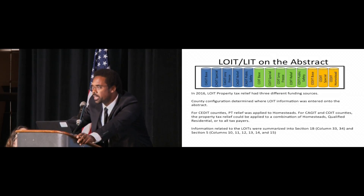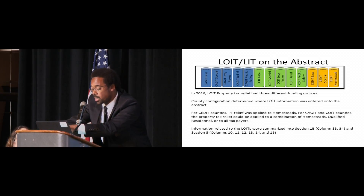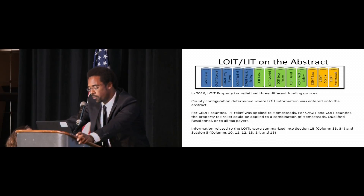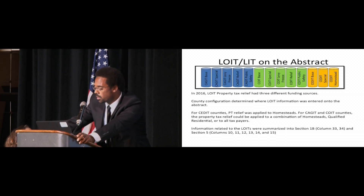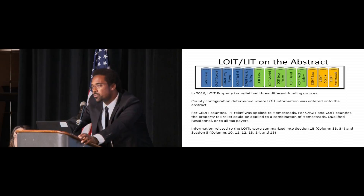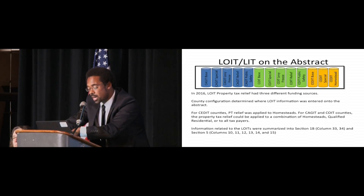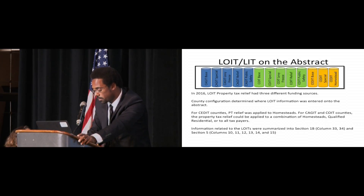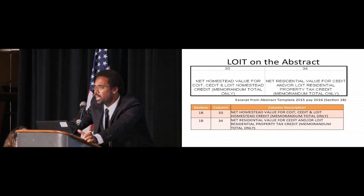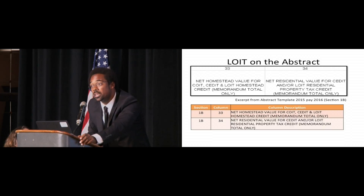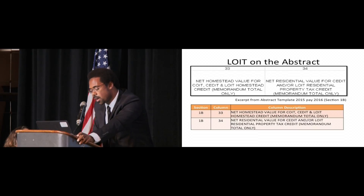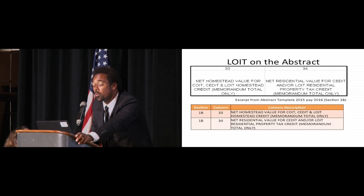When talking about property tax relief from a LOWIT standpoint, we're really focused on three of these buckets specifically: the CAJET relief, the COET relief, and the seated homestead. Information relating to the calculation and usage of those property tax relief funds was summarized into Section 1B and Section 5. This is just a quick excerpt from the abstract itself showing where the homestead and residential values would be listed in Section 1B.